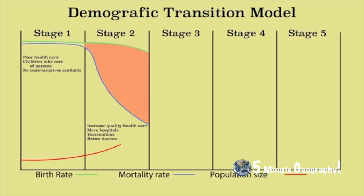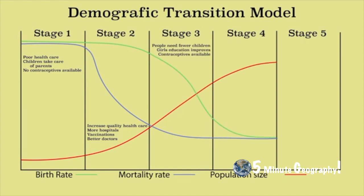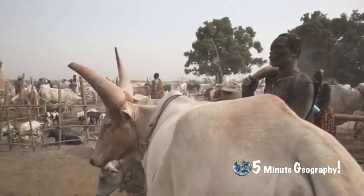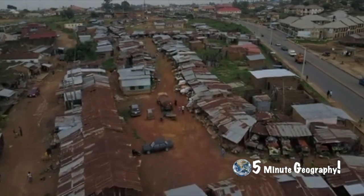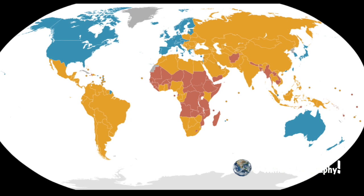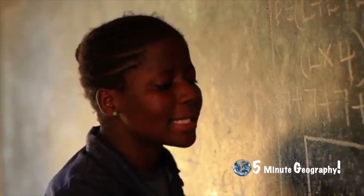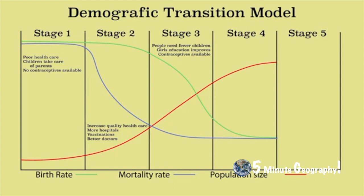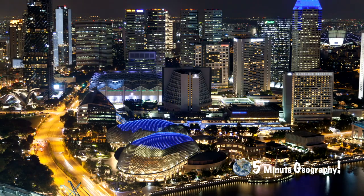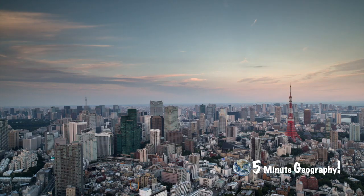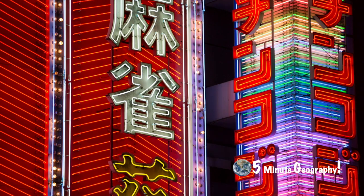What can we predict about population growth using the demographic transition model? Many countries in the developing world are still at Stage 2 and Stage 3, so in the short term the population of these countries will grow. Almost all of the annual global population increase in the future will occur in developing countries where women's status and education still lag behind the developed world. As more countries reach Stage 4, fewer people will be added to the global population. The number of countries at Stage 5 will increase over time, leading to population decline in those countries.